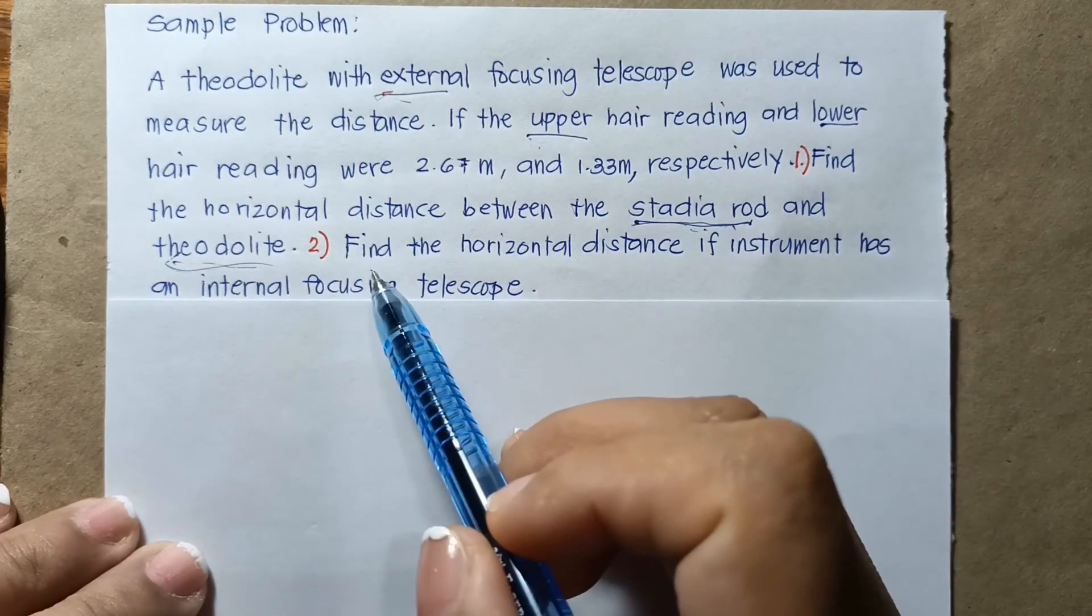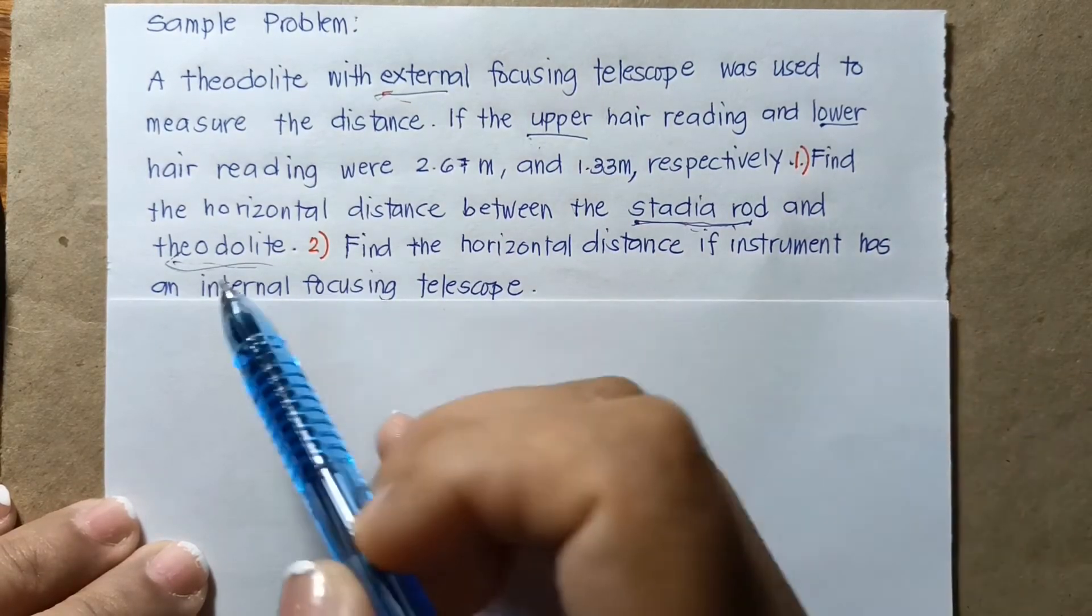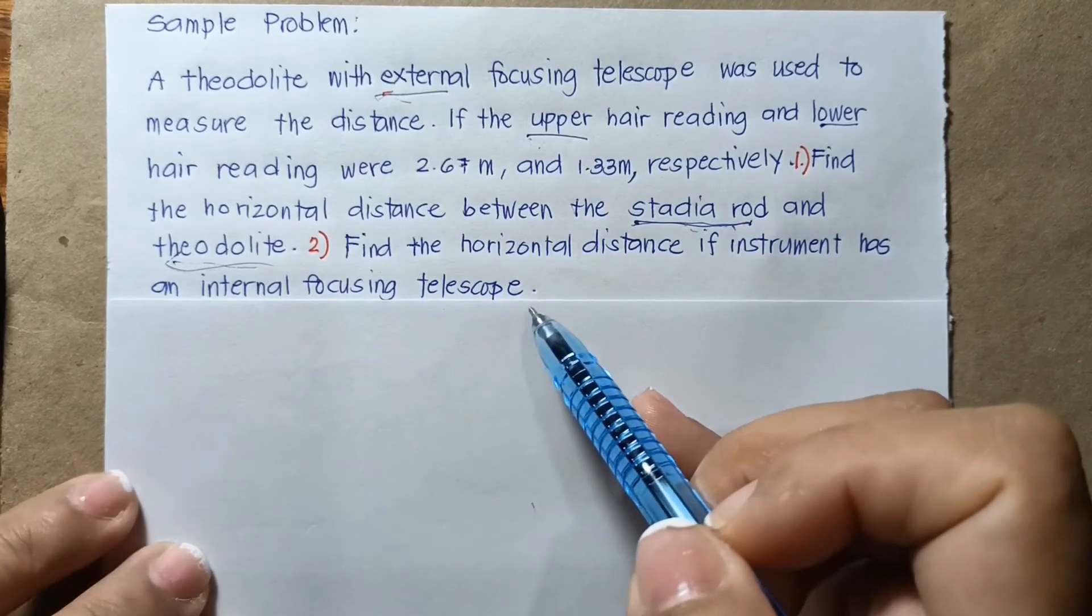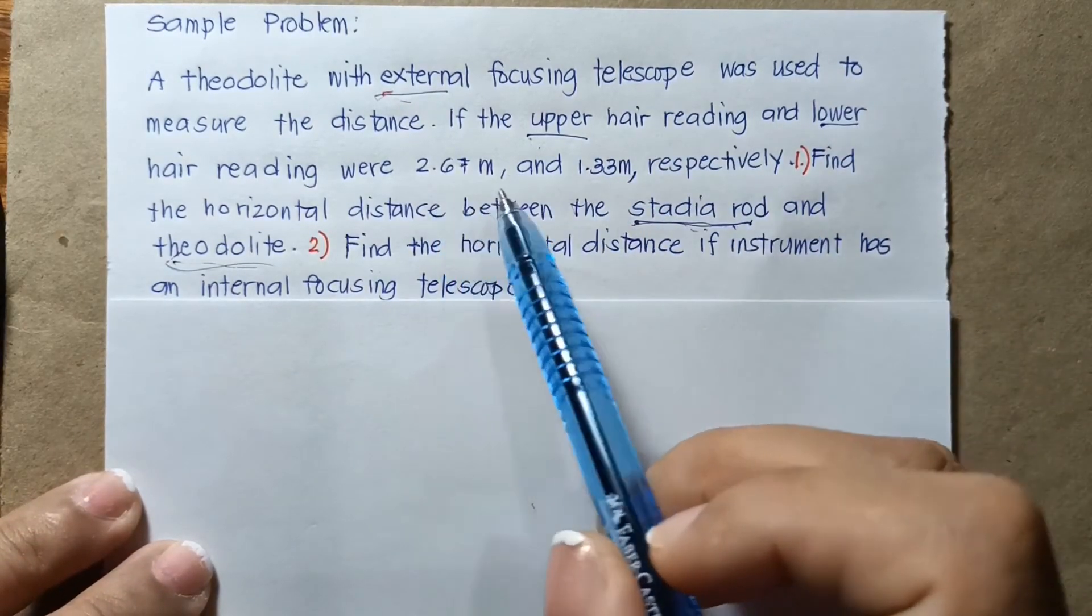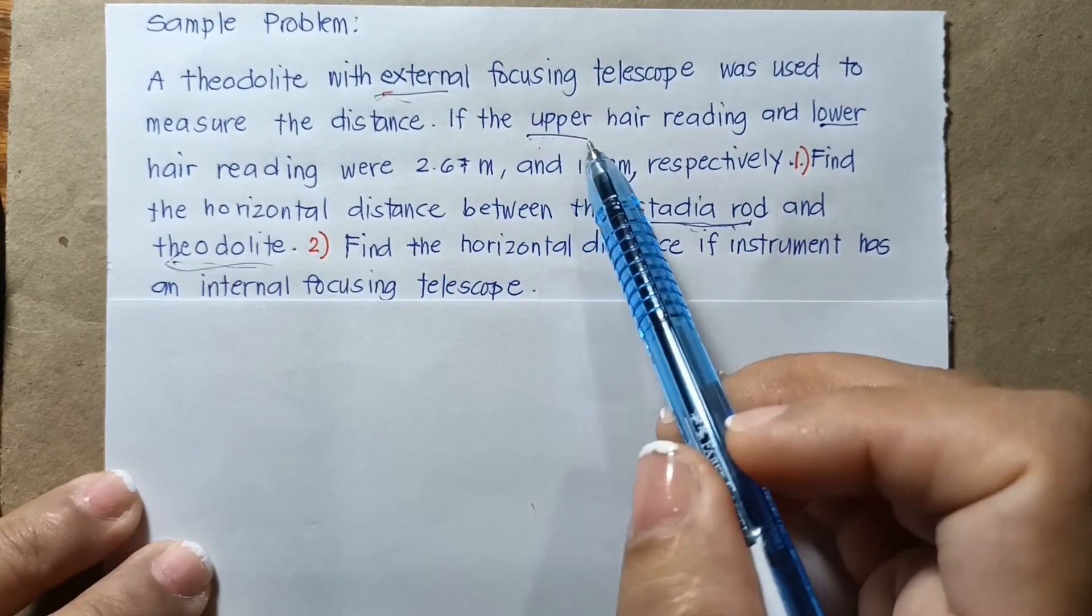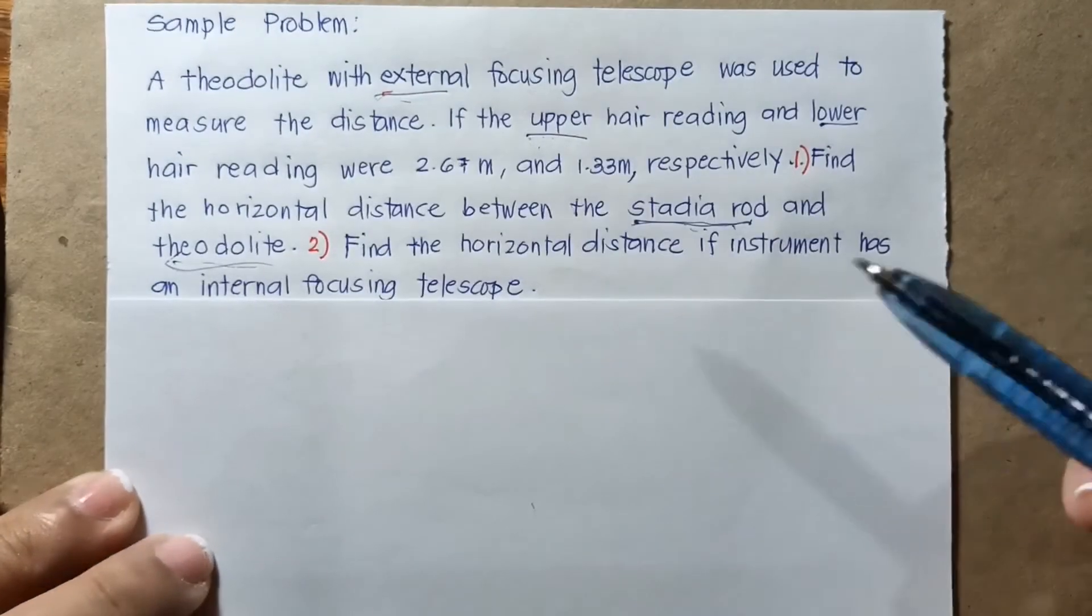Two, find the horizontal distance if the instrument has an internal focusing telescope. So this is a tachymetry by stadia rod because we have here the two hair readings, the upper and the lower hair readings.